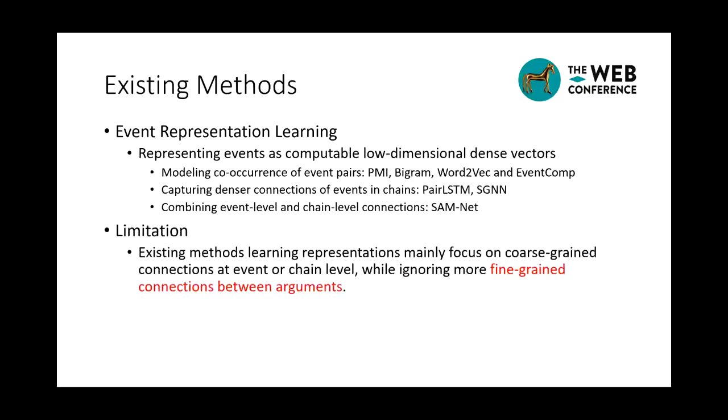Recently, event representation learning has been proposed and successfully applied to SEP tasks. The key idea is to learn distributed vector representations for events so as to describe the inherent properties of events. Existing methods can roughly fall into three groups. The first group models the co-occurrence of event pairs. The second captures denser connections of events in chains. The third further combines event level and chain level connections together.